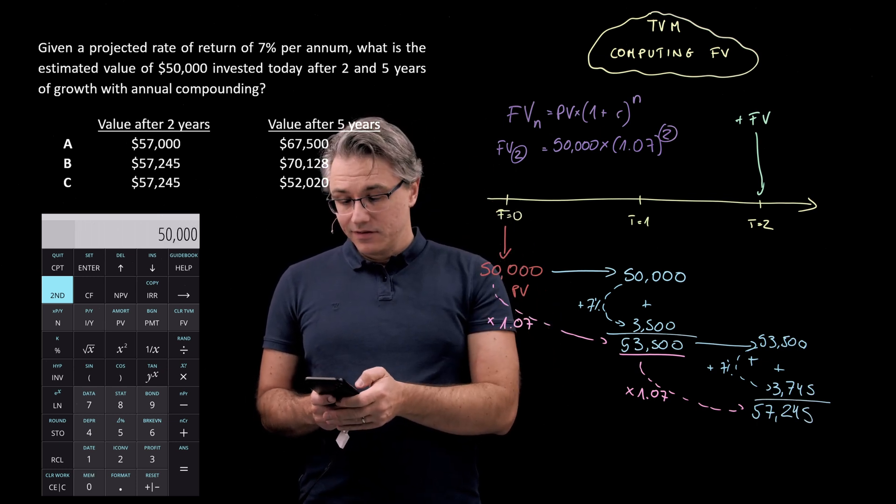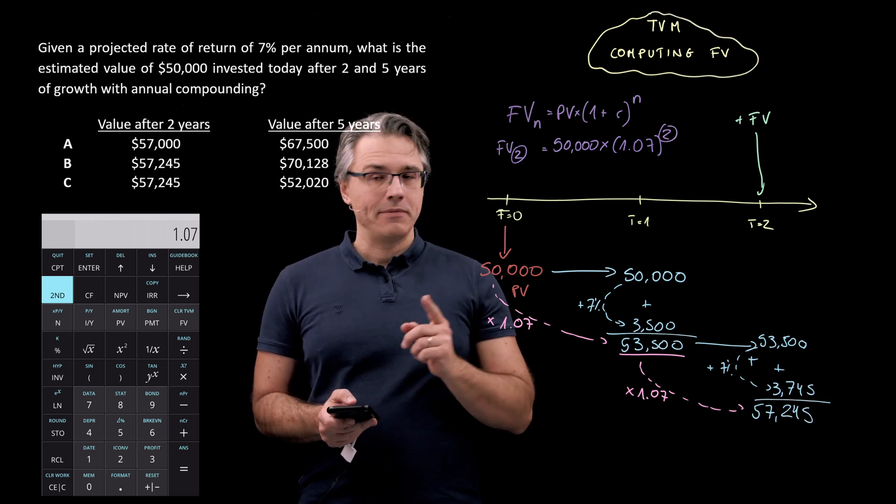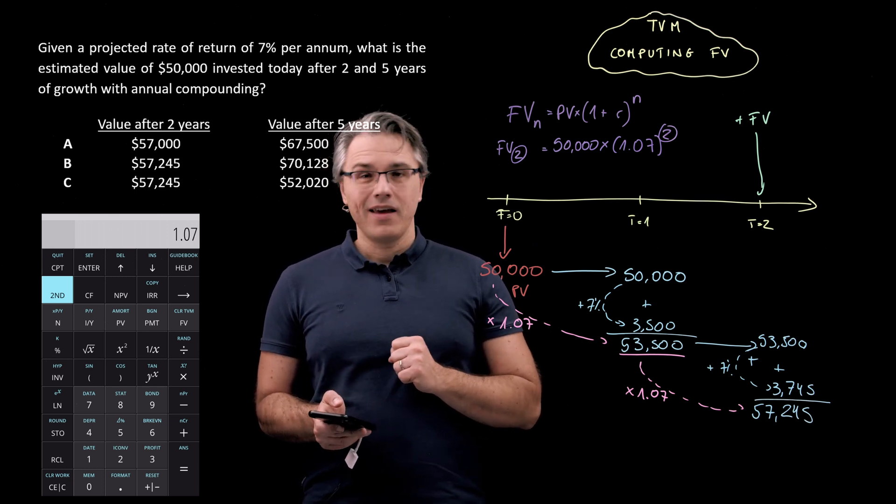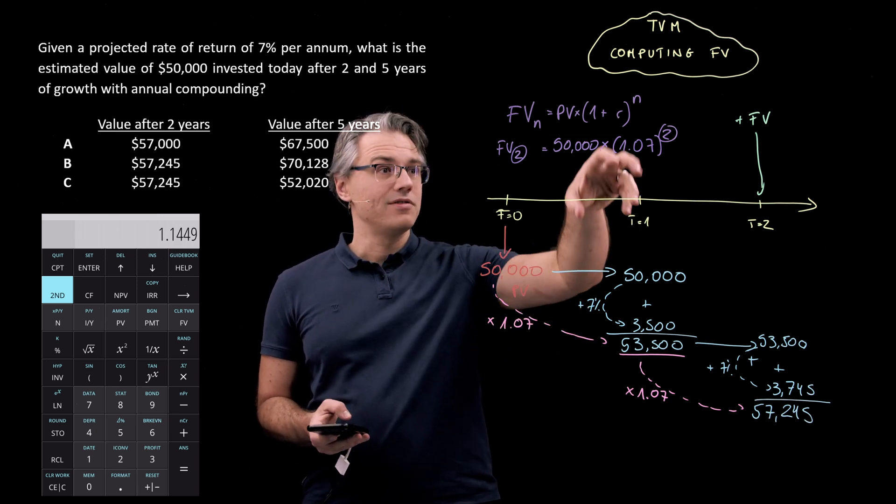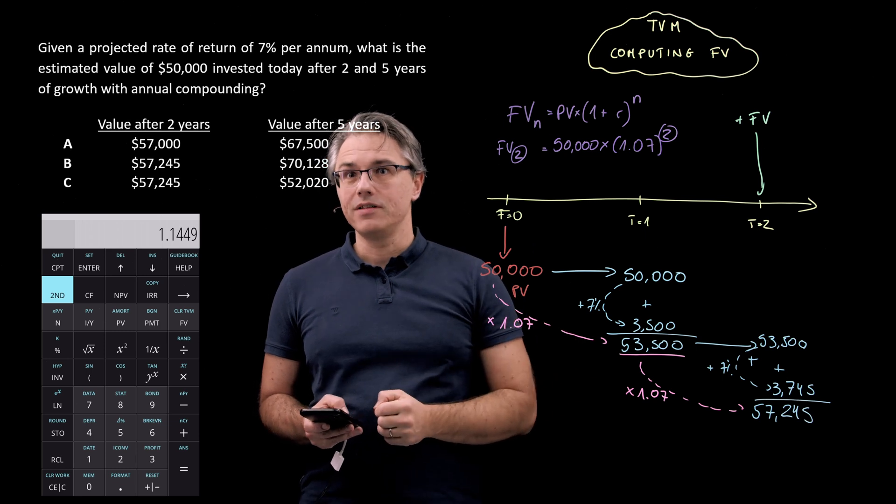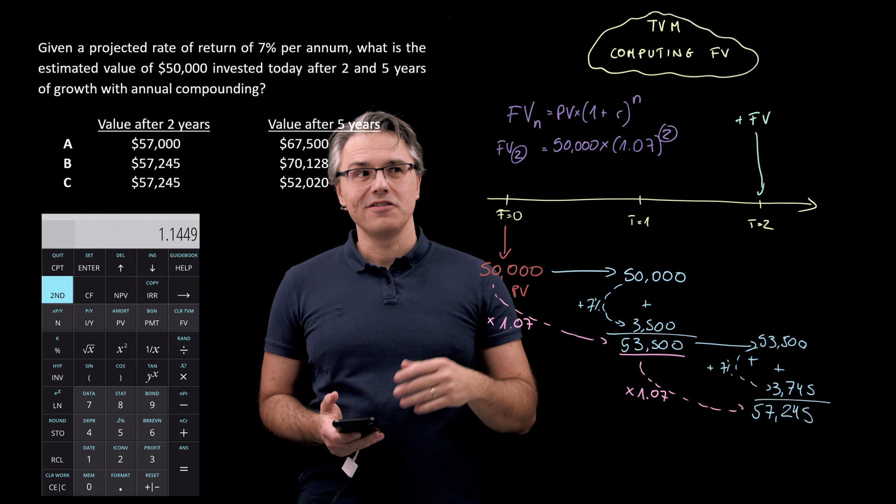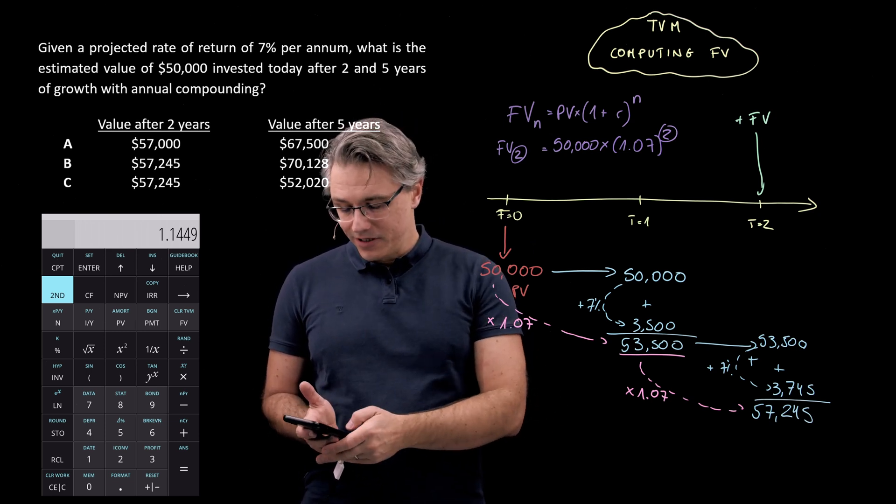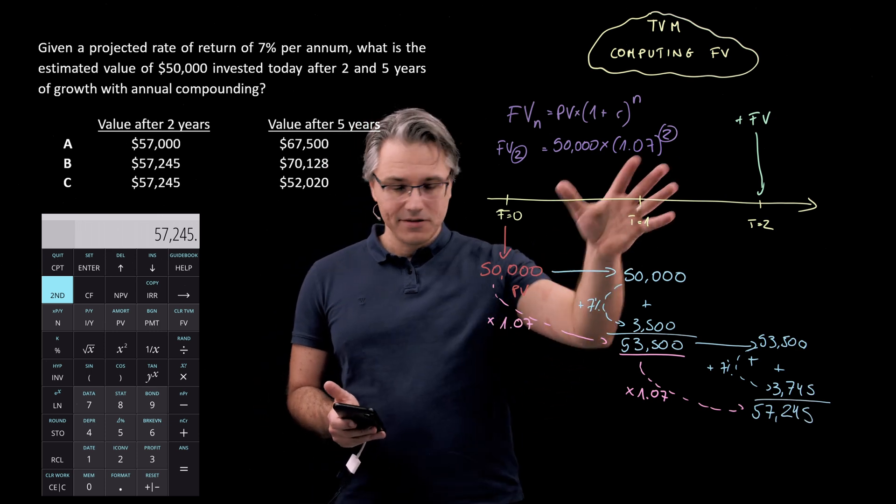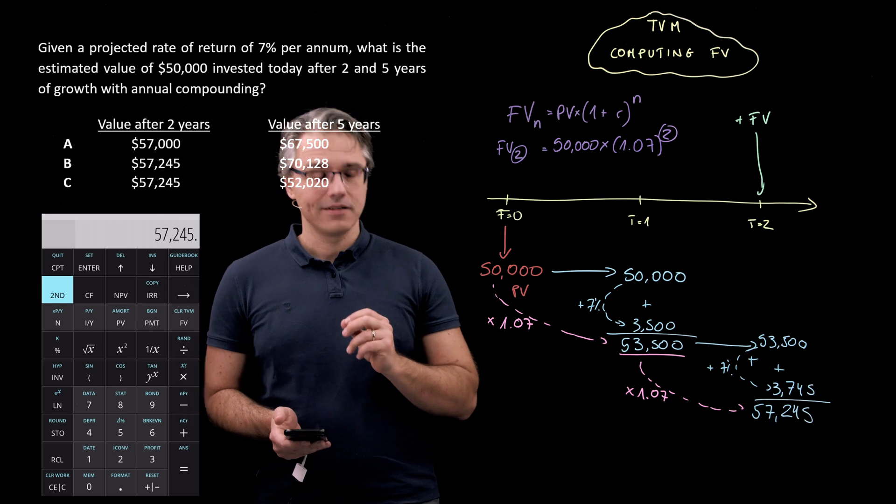So 50,000 times 1.07, and I'm now pressing the x to the power of two button, so x squared button, which is going to square the 1.07. If you didn't format your calculator before, in accordance with my suggestions, it wouldn't necessarily do this in the required order. And I'm pressing equals, and as you can see, 57,245, that answer comes up.